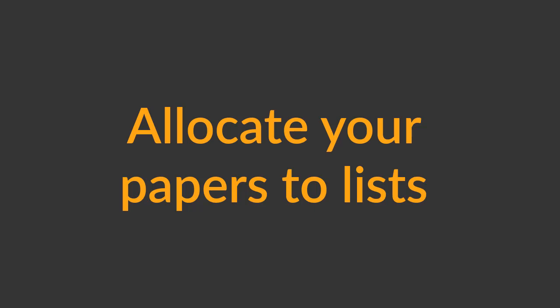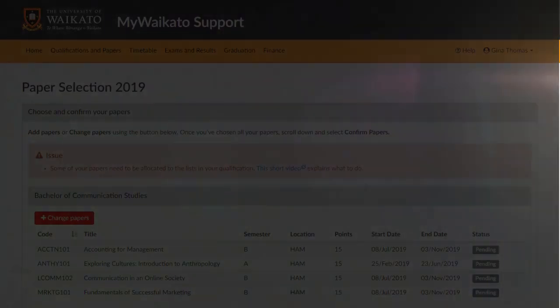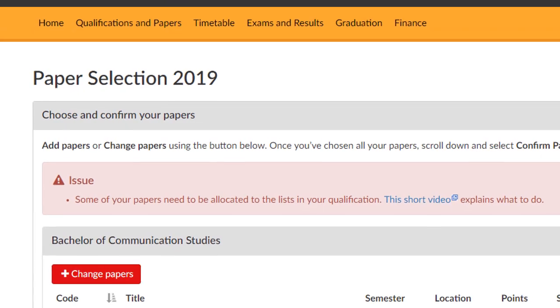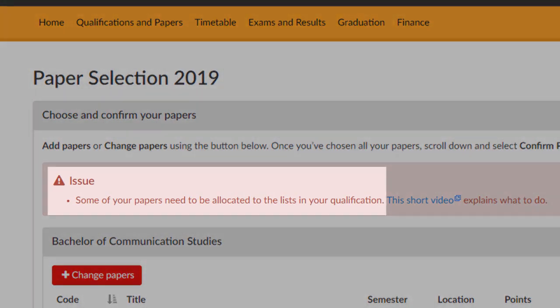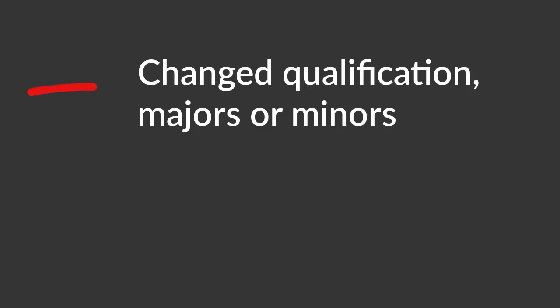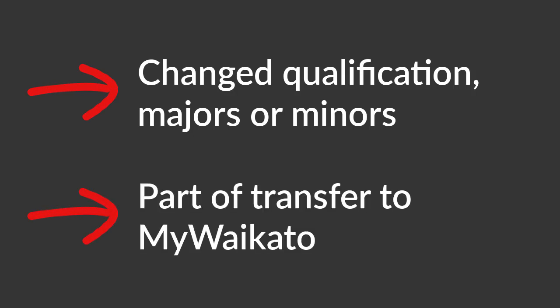When preparing to choose papers, you may be asked to allocate your papers to the lists in your qualification. This could happen for two reasons: you change your qualification, majors or minors, or when your student information was transferred into Maiwakato, it didn't know where to put your papers.